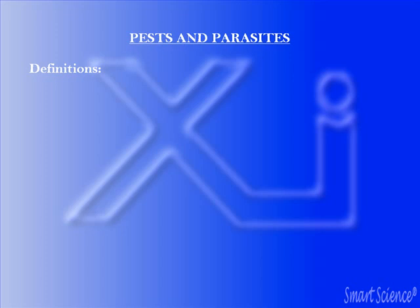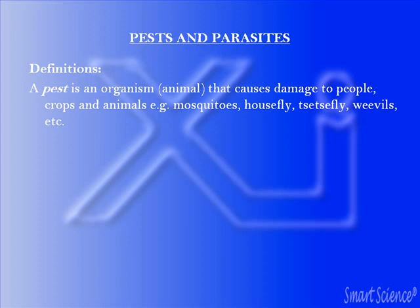A pest is an organism — that is, an animal — that causes damage to people, crops, and animals. So pests are animals. Examples include the mosquito, the house fly, the tsetse fly, the weevil, and so on.